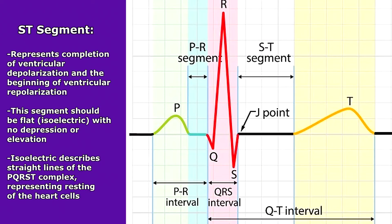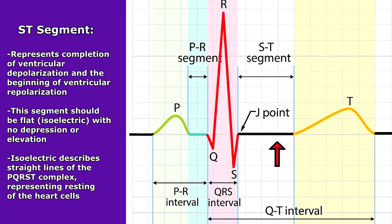The ST segment represents the completion of ventricular depolarization and the beginning of ventricular repolarization. This segment should be flat — isoelectric, meaning flat — so there should be no depression or elevation. Isoelectric describes the straight across lines of the PQRST complex, representing that the heart cells are resting and not contracting or causing electrical activity, so none is being transmitted to the EKG.